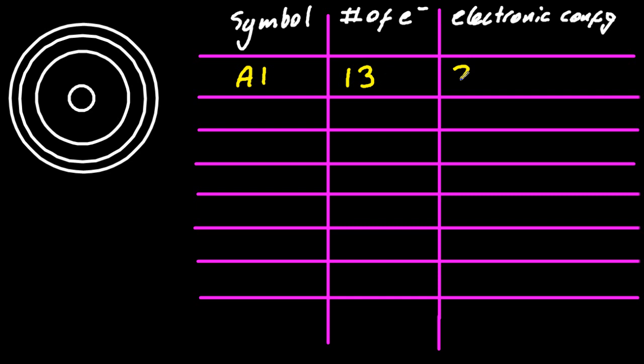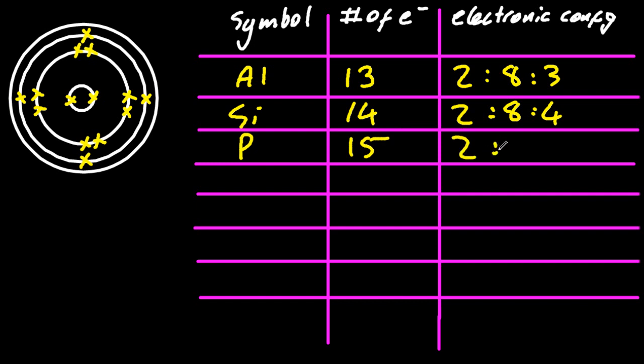Aluminium has 13 electrons, 2-8-3. And so the third shell can hold, in SL chemistry, can hold a maximum of 8 electrons as well.